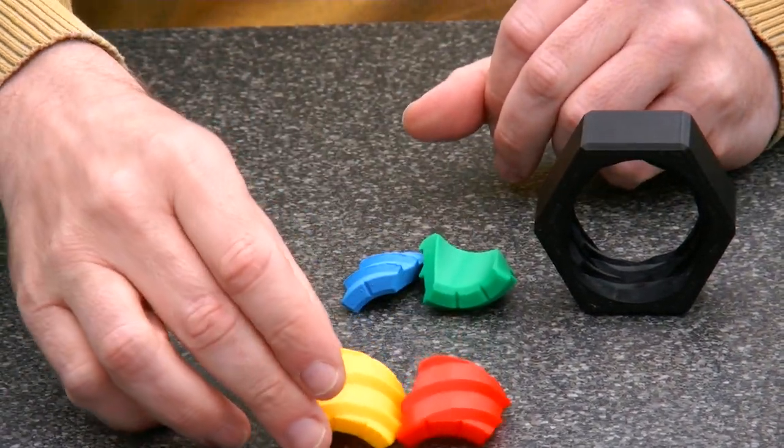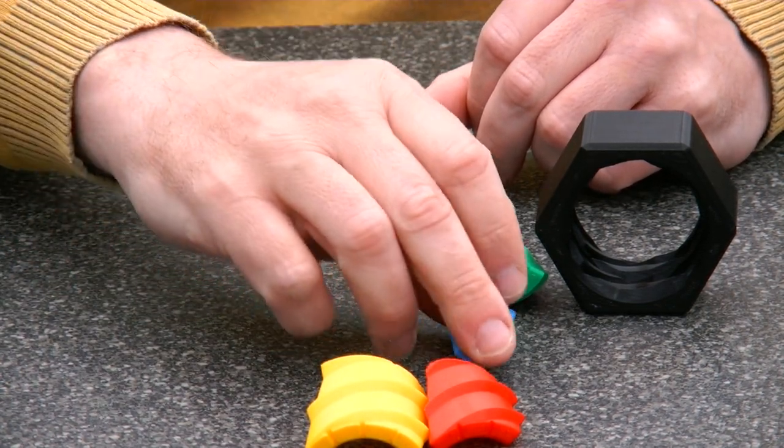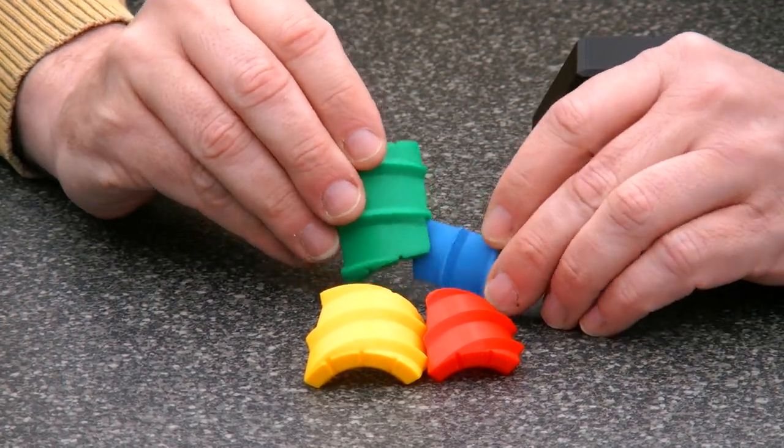So let's have a look at the pieces. You see the red and the yellow piece, they have right-handed threads, whereas the green and the blue have left-handed threads.